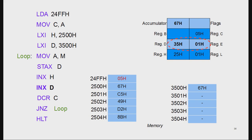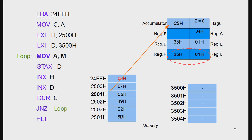INX H increments the HL pair and INX D increments the DE pair. DCR C decrements register C by one. Since the result is not zero, the zero flag is not set. Because the zero flag is not set, the next line JNZ Loop repeats the action.